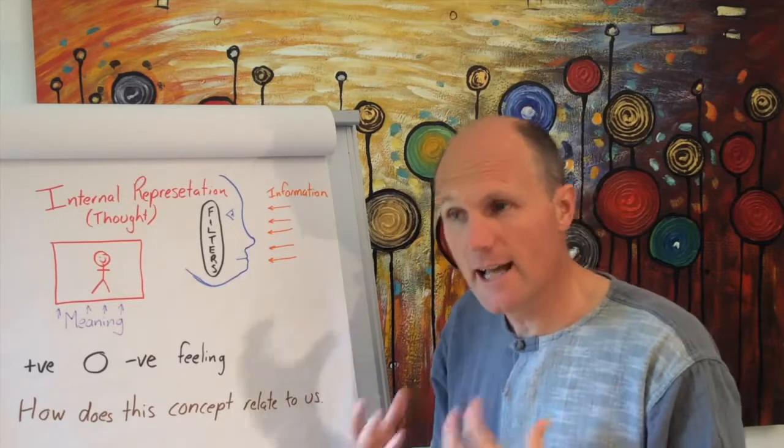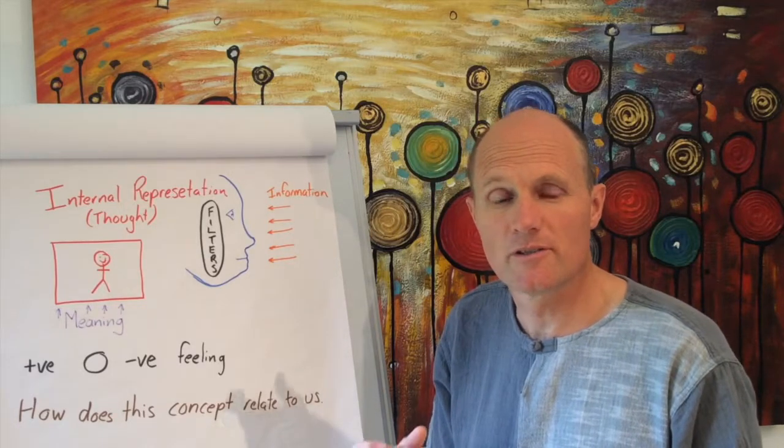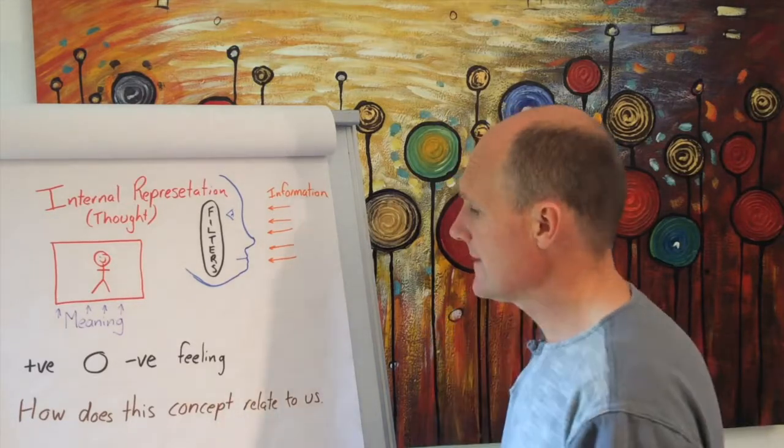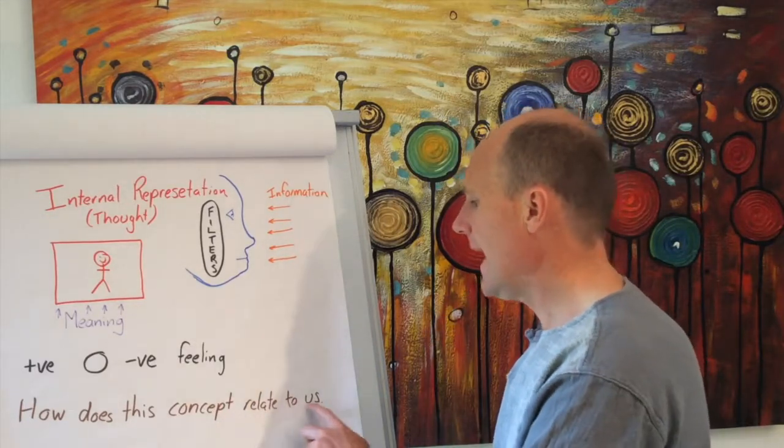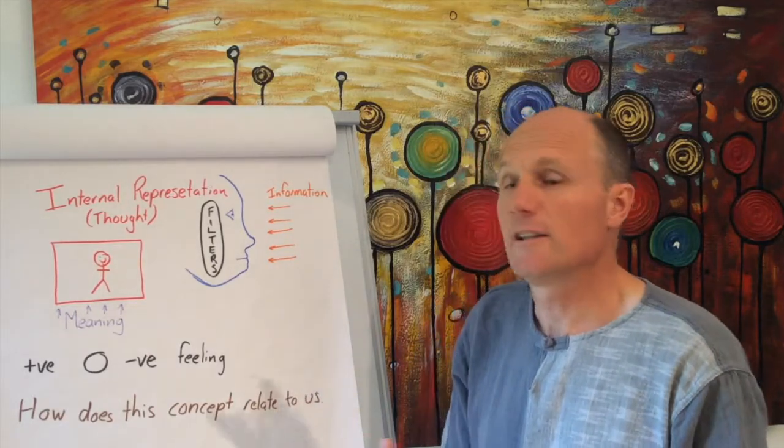We need to understand, whenever we think about something, that there's one attribute which is always there, and that is this idea of impermanence. Now the second area is how it relates to us ourselves.